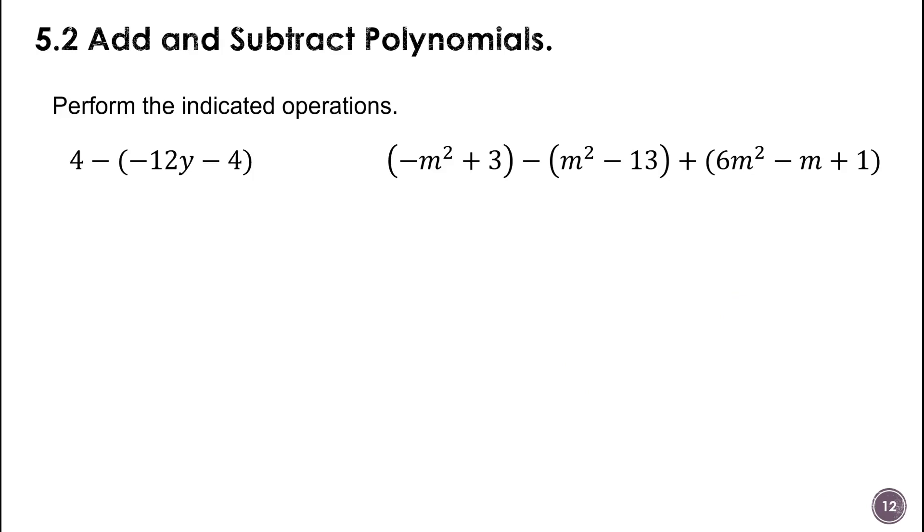Okay, so you see it's getting a little more complicated here. I'm going to rewrite this first one. So this is going to be 4. That's going to be minus a negative makes that a plus, 12y. Minus a negative 4 makes it plus 4. So we're going to put the 12y and then plus 8. 4 and 4. And that one is complete.